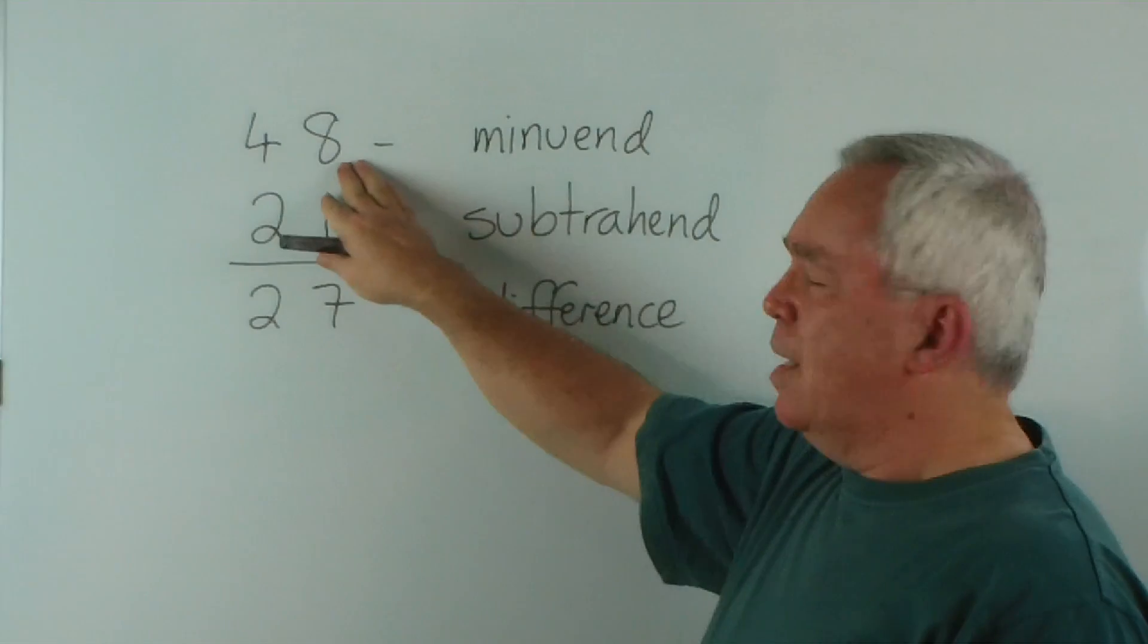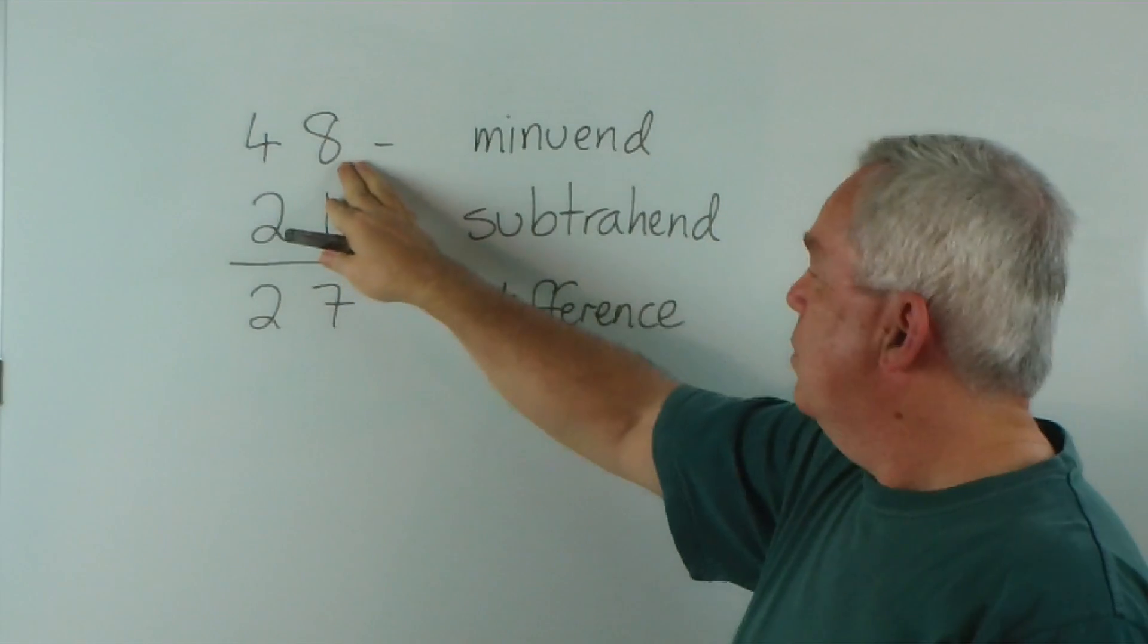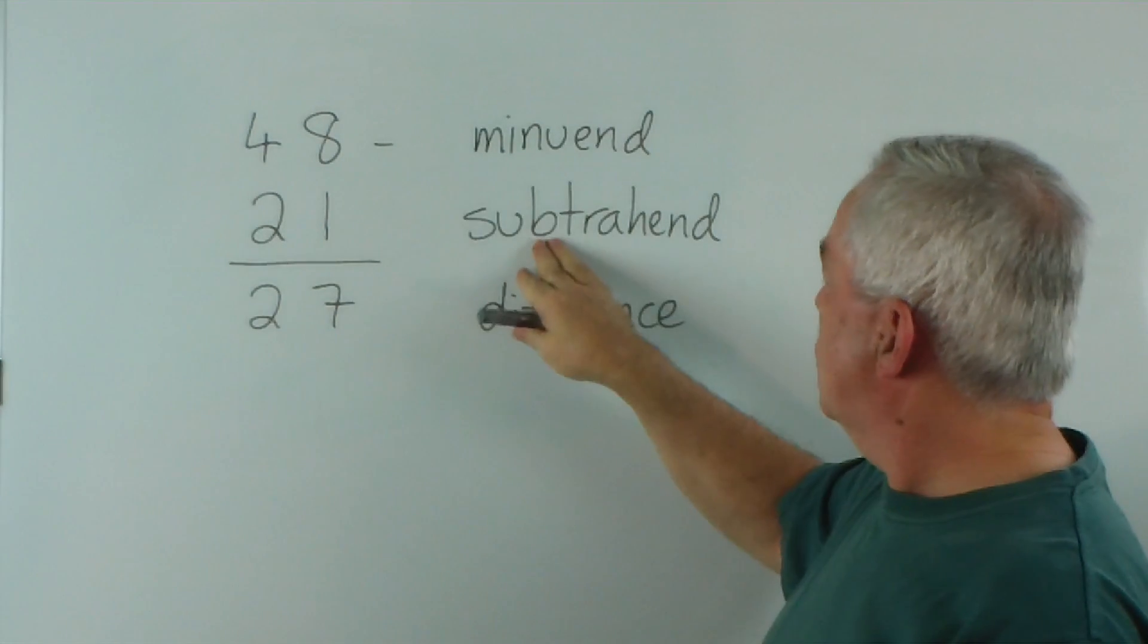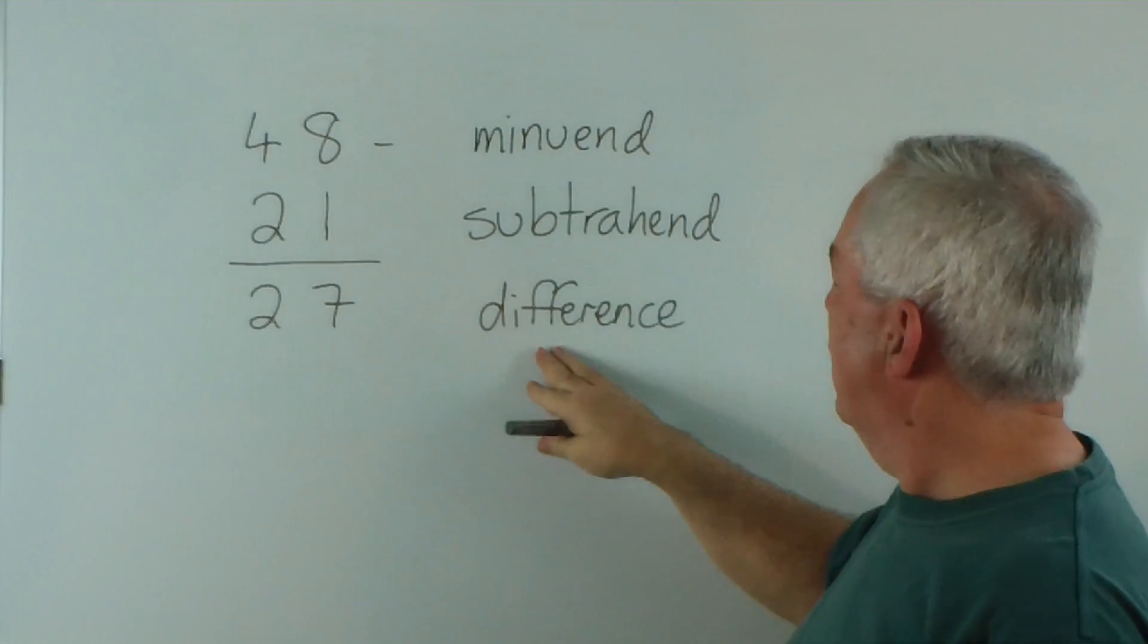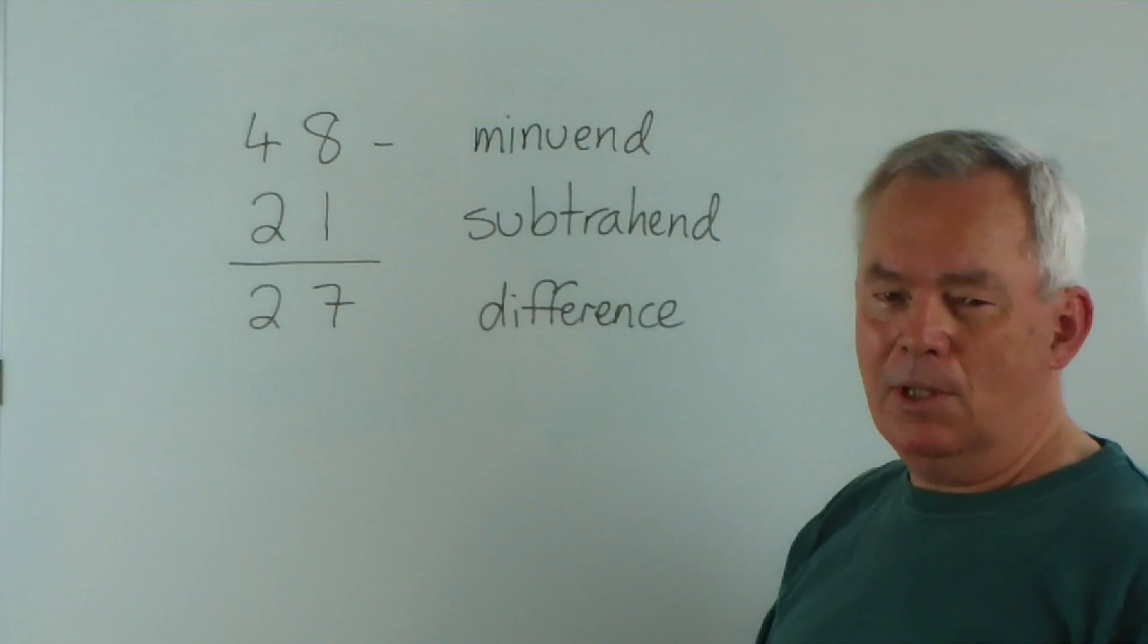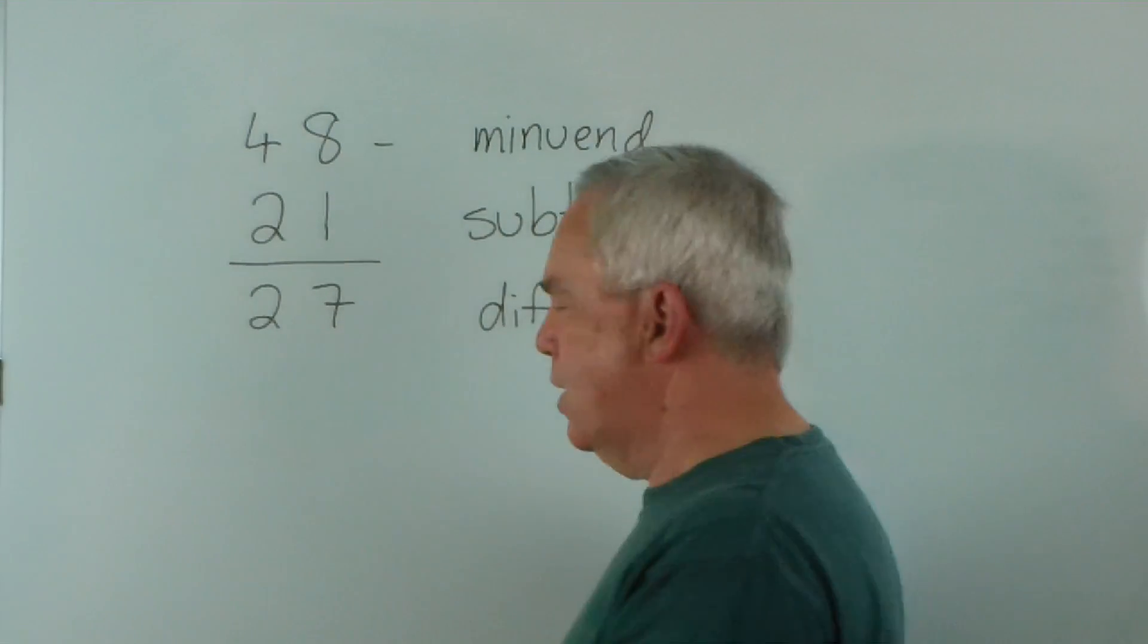The minuend is the number at the top that we subtract from. The subtrahend is the number underneath, the number we take away. And the difference is the result, the gap between the numbers.